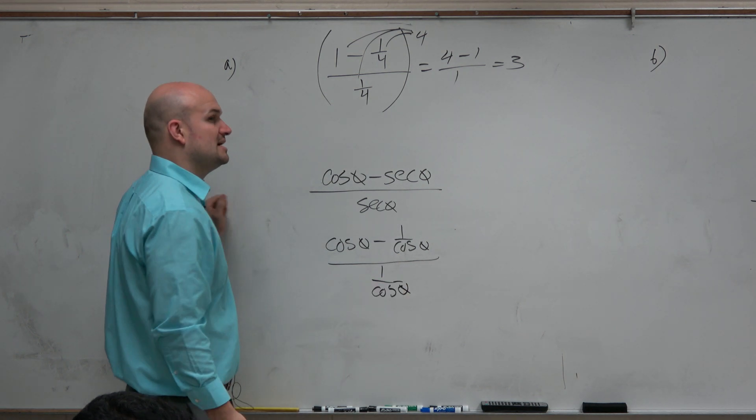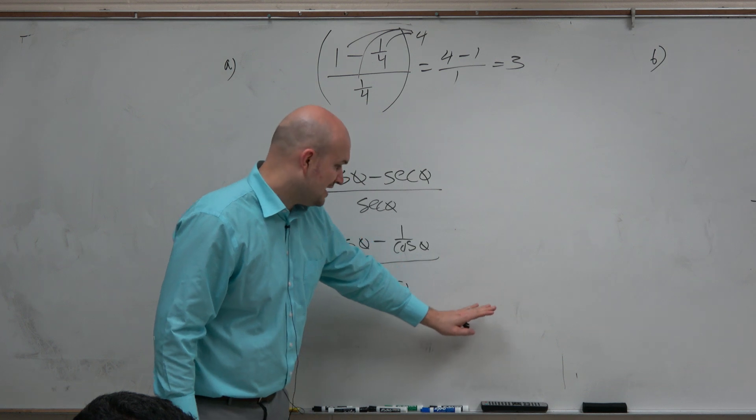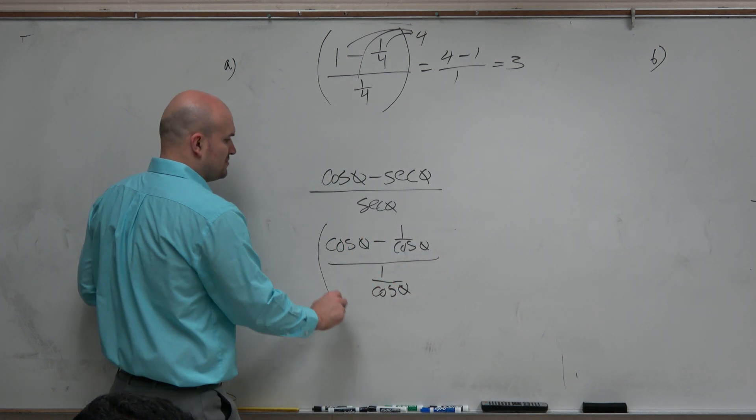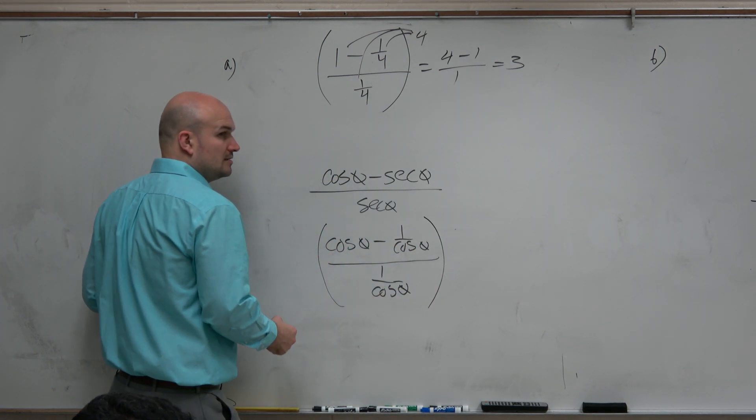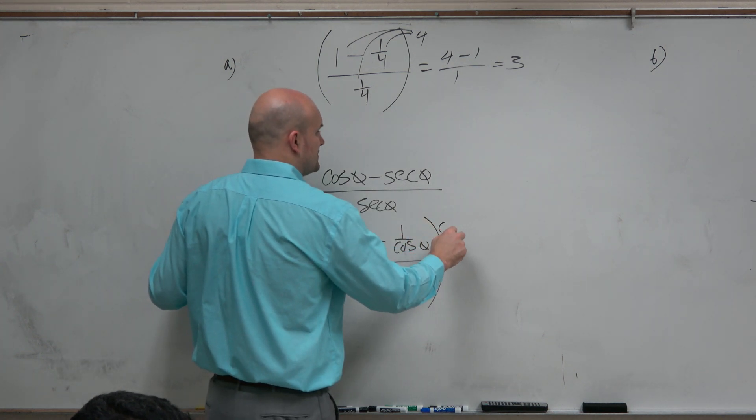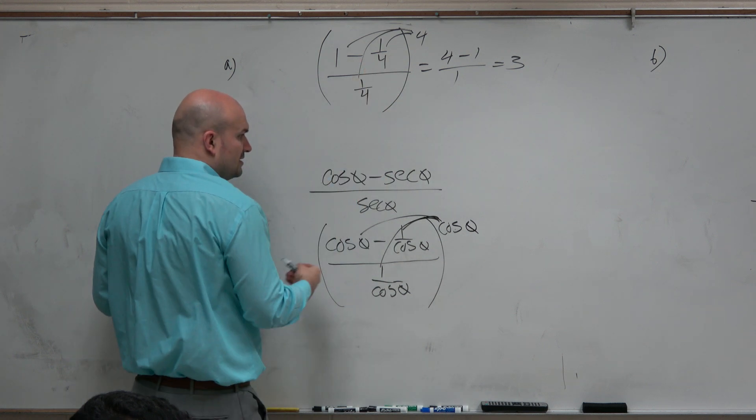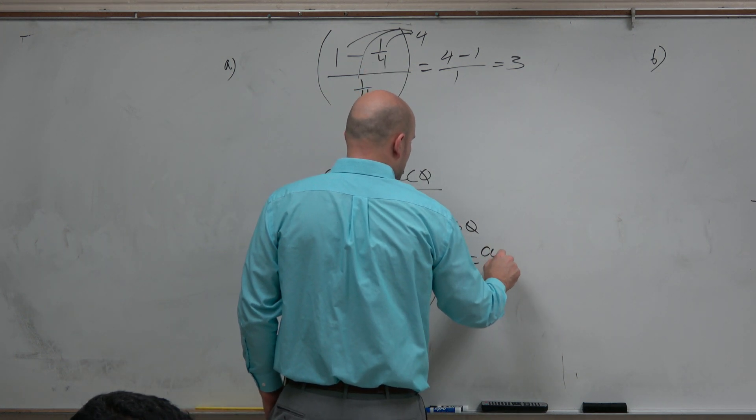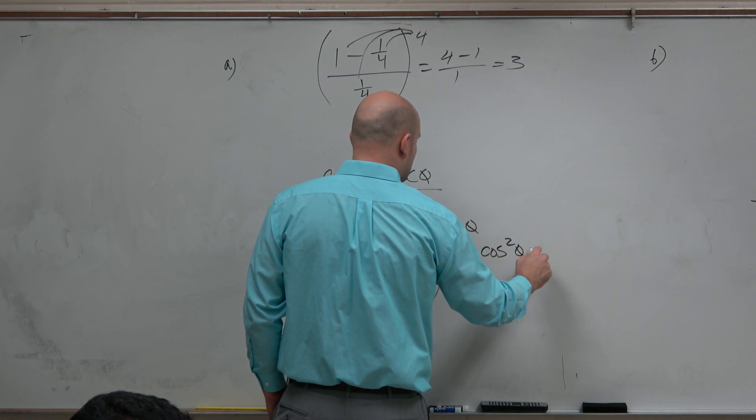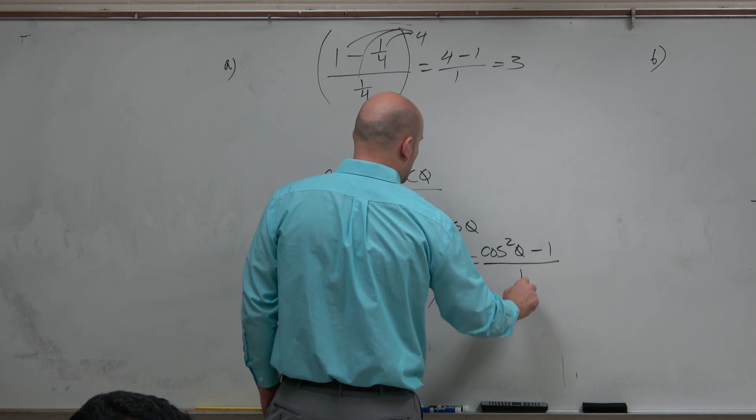Now everything's in terms of sines and cosines. And I recognize that my common denominator of all of these would be cosine. So if I multiply by cosine of theta and do just like I did up here, I'm going to end up with a cosine squared of theta minus 1 all over 1.